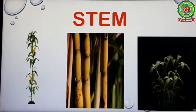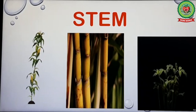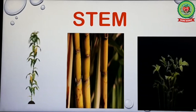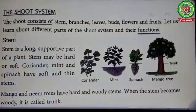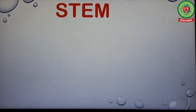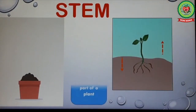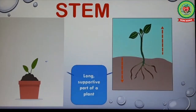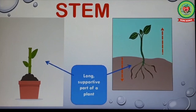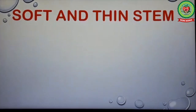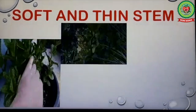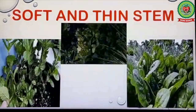The stem bears branches, leaves, buds, flowers, and fruits. Stem is a long supportive part of a plant. Stem may be hard or soft. Look at this picture — this is a long part of a plant known as stem, and it gives support to a plant. Coriander, mint, and spinach have soft and thin stems.